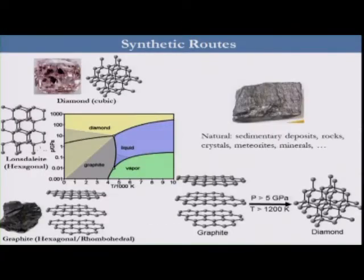Even though carbon is a very abundant element in nature, these new phases like fullerenes, carbon nanotubes, and graphene are unlikely to be found in nature and need specific experimental techniques — like epitaxial growth, laser ablation, and chemical vapor deposition — to be obtained. However, for diamond and graphite, they can be found in nature in the form of deposits, rocks, crystals, meteorites, and many minerals.